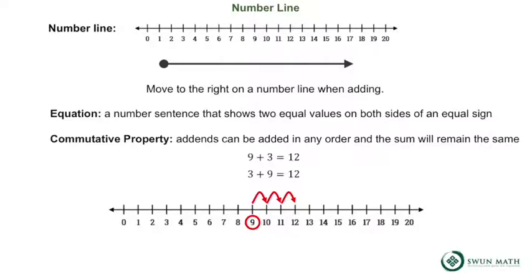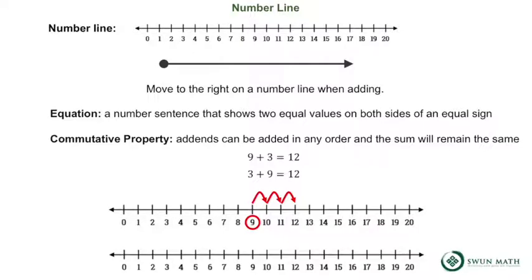Now let's look at 3 plus 9 equals 12. 3 is the first addend. Here's 3 on the number line. 9 is the second addend. So we will jump 9 spaces to the right. 1, 2, 3, 4, 5, 6, 7, 8, 9. Once again, we get a sum of 12.